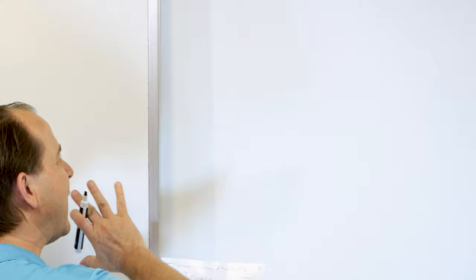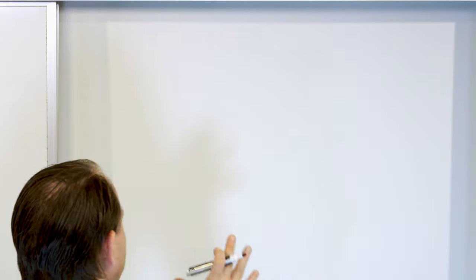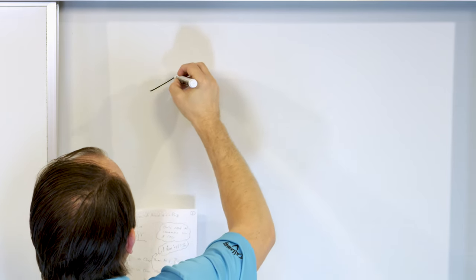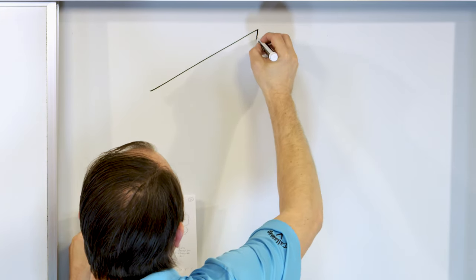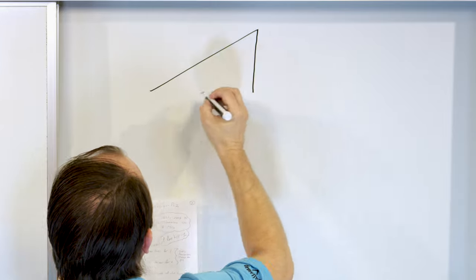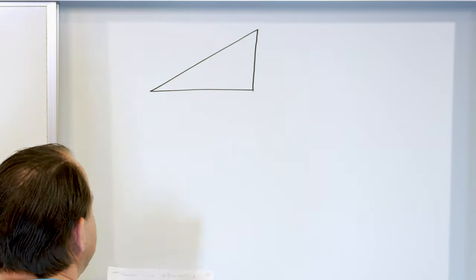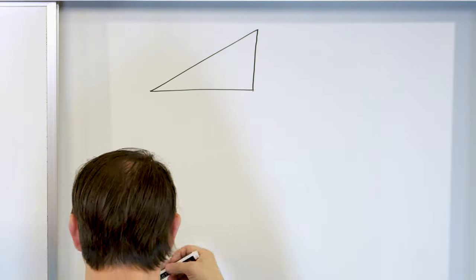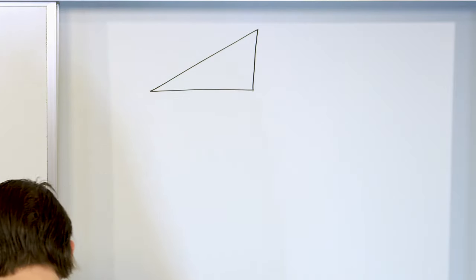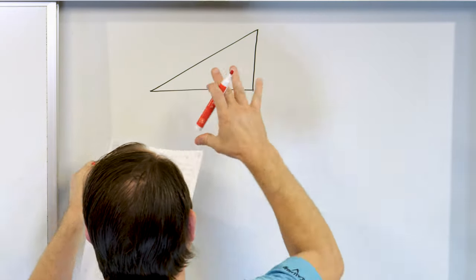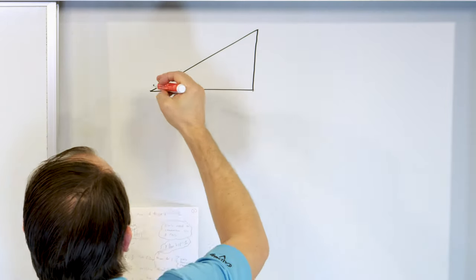What I'm going to do is draw a triangle on the board, write all the trig functions down, and then we're going to talk about them. You should understand exactly where they come from by the end of this. Everything boils down to right triangles. So I'm going to draw a right triangle and superimpose it on an x-y axis.